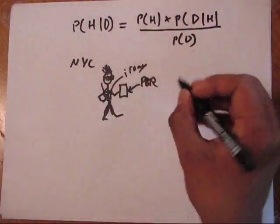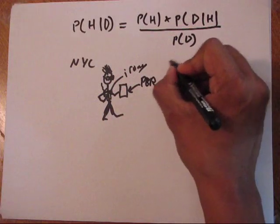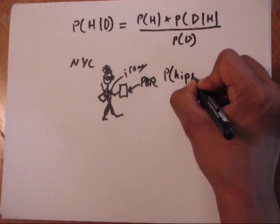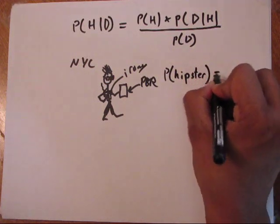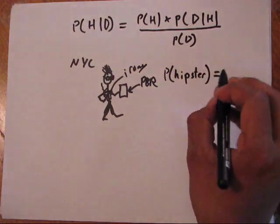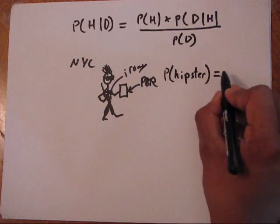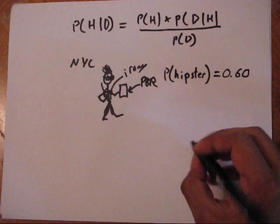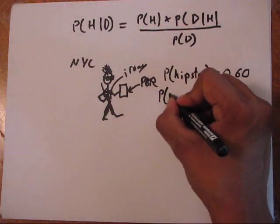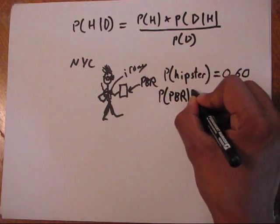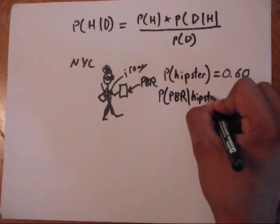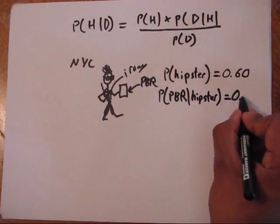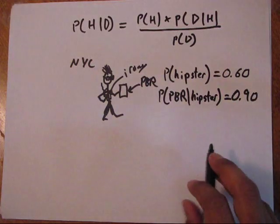We need some data in order to do this. First thing we need is the probability that someone is a hipster. We're in Williamsburg, so there's a lot of hipsters, so say the probability is like 0.6—there's a lot of people that are hipsters there. Then we say, what is the probability that you're drinking PBR given that you're a hipster? Let's say it's like 90%.